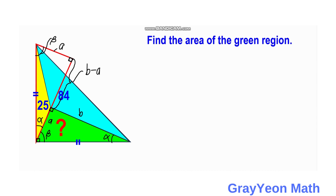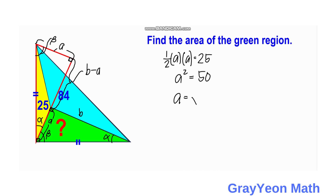Next, we focus on the yellow triangle, which has an area of 25 square units. If we make the height as A (the shorter leg) and the base is also A, then we have: one-half times A times A equals 25, so A squared equals 50, and A equals the square root of 50. Since 50 equals 5 squared times 2, A equals 5 times the square root of 2.